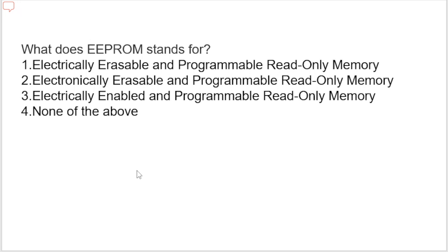What does EEPROM stand for? Options are: electrically erasable and programmable read-only memory, electronically erasable and programmable read-only memory, or electrically enabled and programmable read-only memory. The correct option is electrically erasable programmable read-only memory. It is used to erase stored data using high voltage electric charge and reprogram it. It is erased and reprogrammed electrically without using ultraviolet light. It is sometimes called E²PROM.